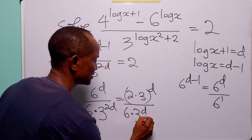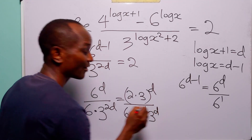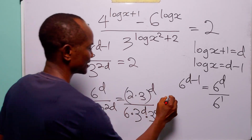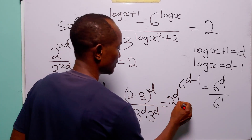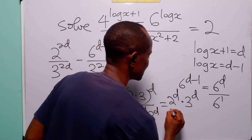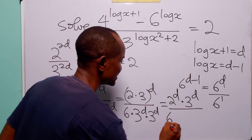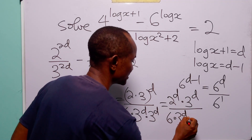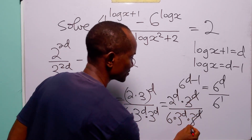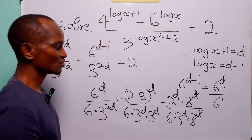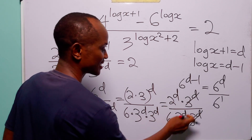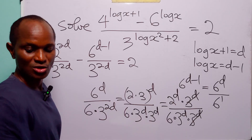Expanding 6 to the power d as 2 to the power d times 3 to the power d, the expression becomes 2 to the power d times 3 to the power d, divided by 6 times 3 to the power d times 3 to the power d. The 3 to the power d terms cancel, leaving us with 2 to the power d divided by 6 times 3 to the power d.